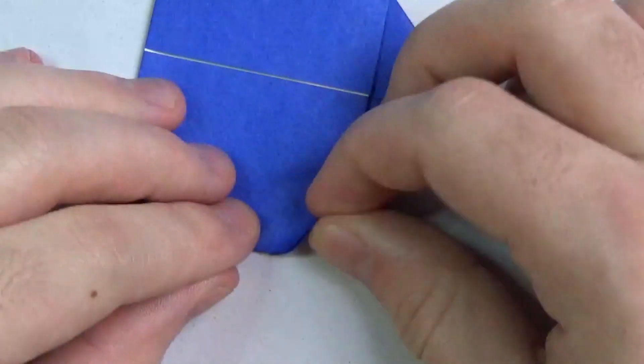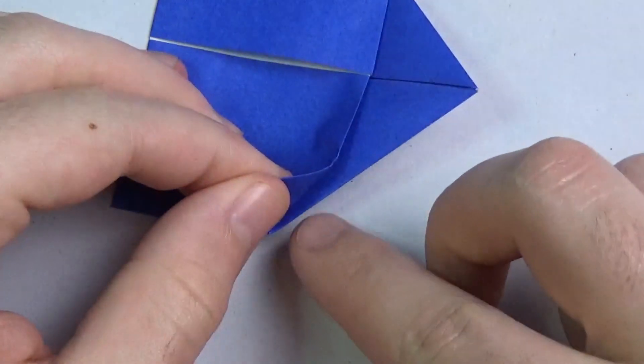And fold this up so that the fold you're making aligns with this edge. Okay, and repeat on this side. Fold it so that the fold you're making aligns with that edge.